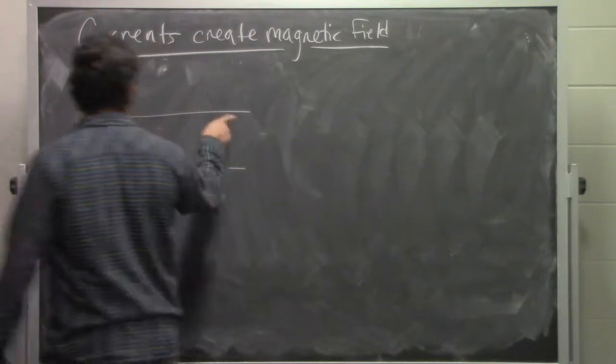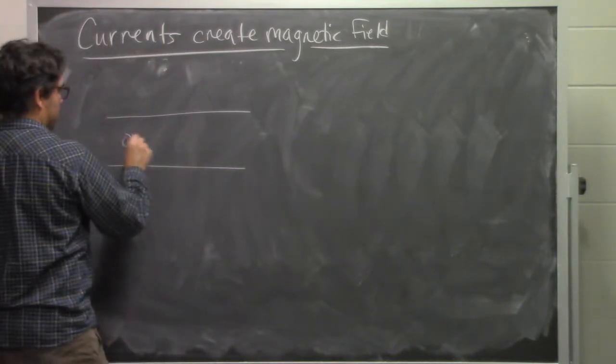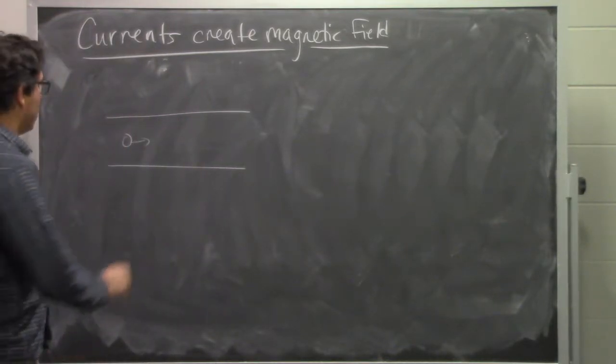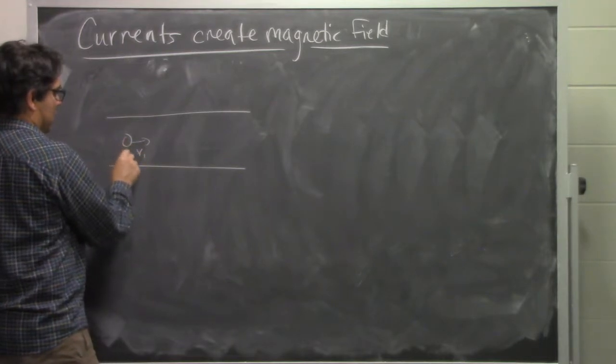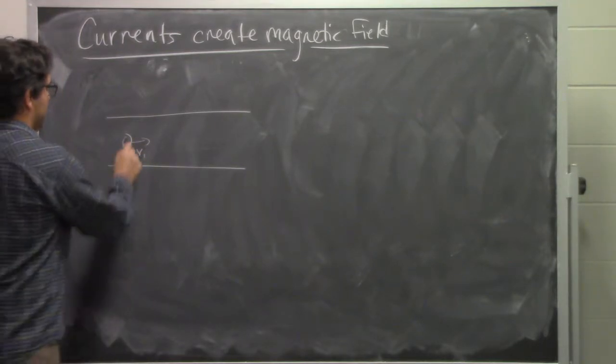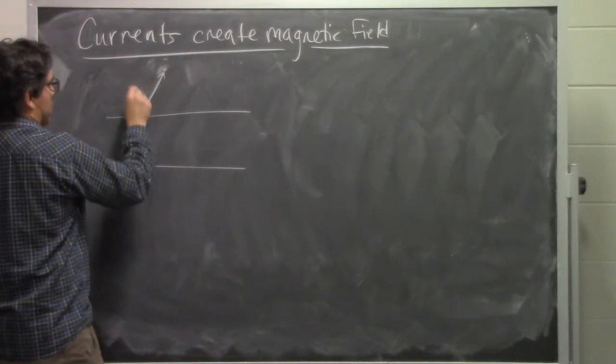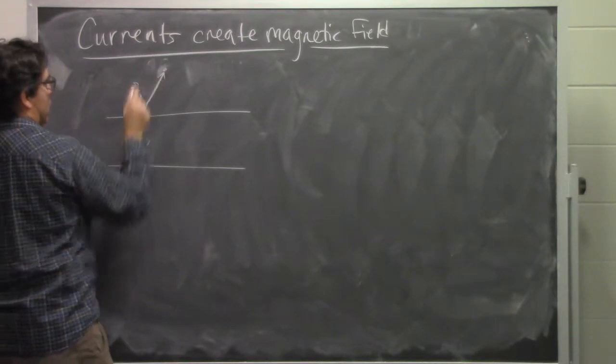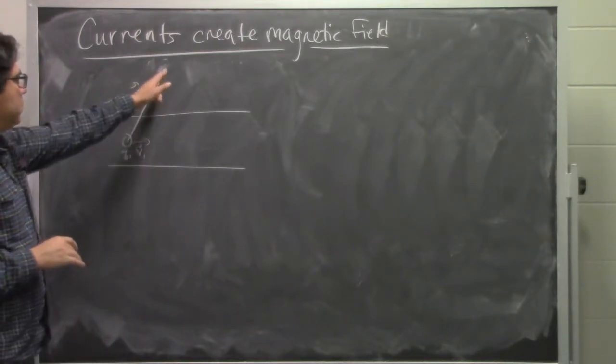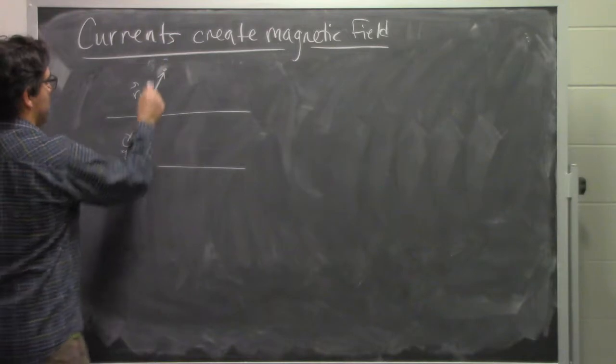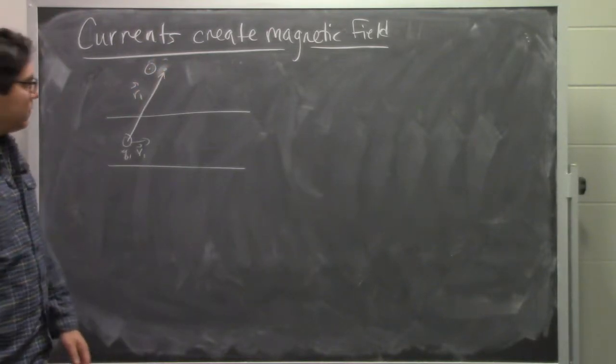Going back to this picture of a wire here, if we think about a single charge moving in that wire with some velocity V1 and has some charge Q1, it will produce a magnetic field at the location of this point that points out of the board.